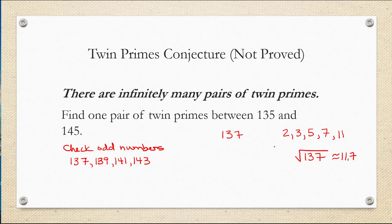It's possible that 137 is divisible by a larger prime, larger than 11, but it would have to be multiplied by a smaller one. So we only have to check these five primes.